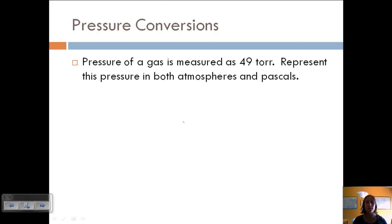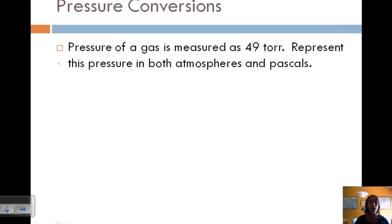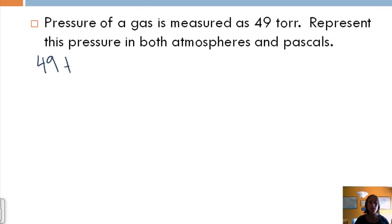Pressure of a gas is measured as 49 torr. Represent this pressure in both atmospheres and pascals. So let's do that. So we've got 49 torr. Let's do atmospheres first.